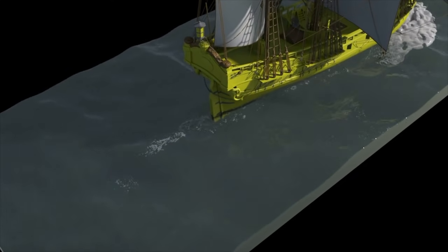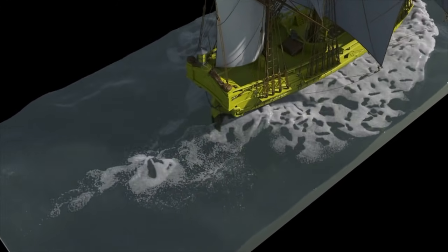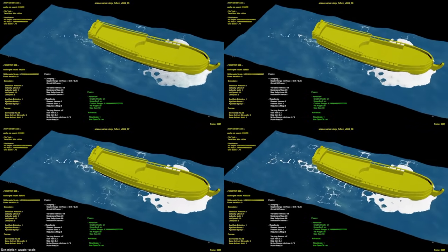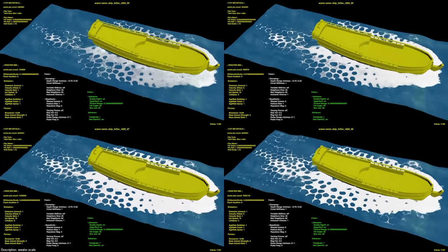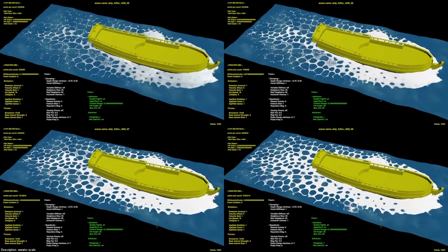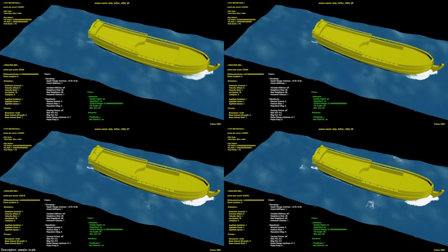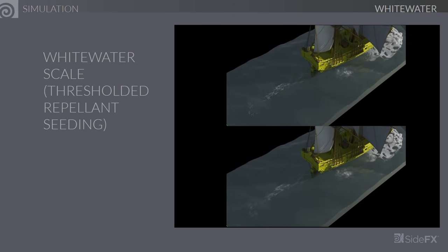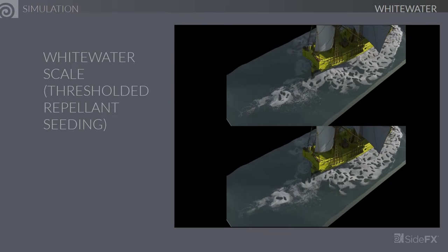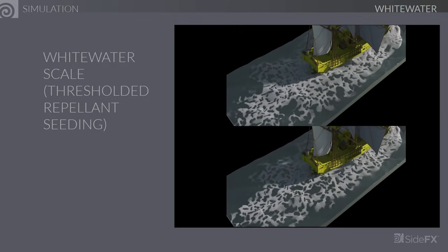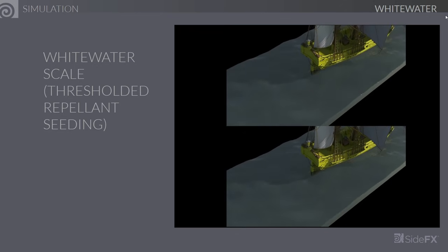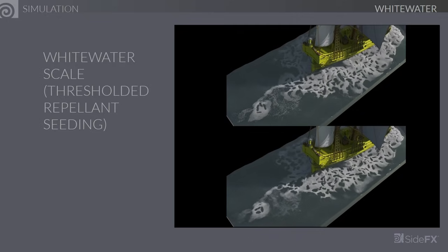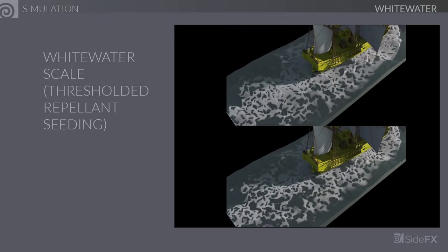Here's an example of how that looks. If you watch the front of the ship, you can see the specular shimmering, giving the whitewater a much wetter look than without specular highlights enabled. On the simulation side, this same simulation was performed at four different resolutions or whitewater scales, and they all look basically the same — the lower resolution simulations simply have fewer particles, whereas the higher resolution ones have substantially more. One caveat is that if you have thresholded repellent seeding enabled, density approximations will be quite different at different resolutions, so the foam structure generated may differ somewhat, though the overall look remains quite similar.